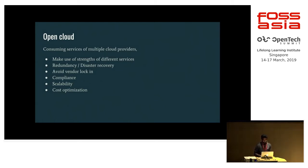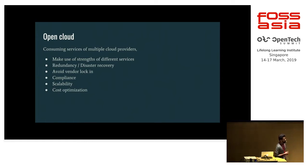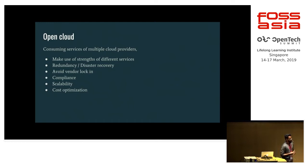Why would we need open cloud? One such use case is to make use of the different strengths of different services. Different cloud providers such as AWS and GCP have similar but distinct sets of services, and we can leverage the best of each using the open cloud paradigm. Another reason is redundancy and disaster recovery — we can use open cloud to protect against disasters. And to avoid vendor lock-in: as an organization, you might not want to be tied to one particular cloud provider.